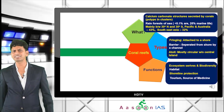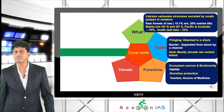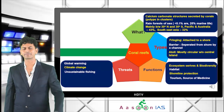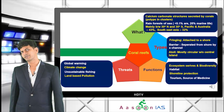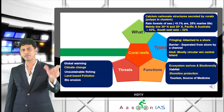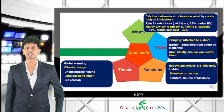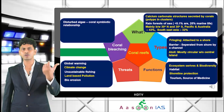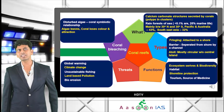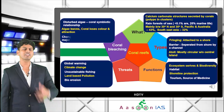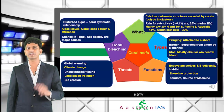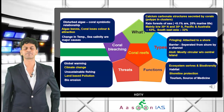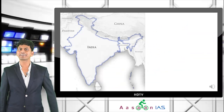Benefits include ecosystem services, biodiversity, important habitat, shoreline protection, tourism, medicine, and recreation. Threats include global warming, climate change, unsustainable fishing, land-based pollution, and bioerosion. Coral bleaching occurs when algae leave the coral due to unfavorable conditions — the two major causes are change in temperature and change in sea salinity.